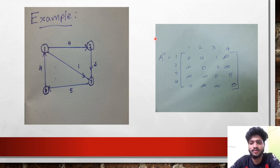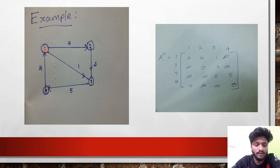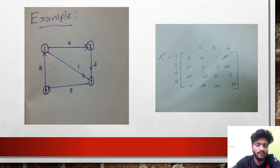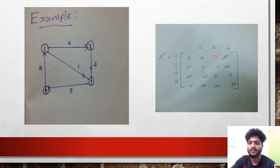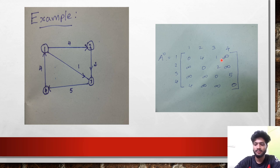We fill the distance matrix such that all diagonal elements are 0. Then we find element A0[1,2] by checking the weight of the edge from vertex 1 to vertex 2, which is 4, so we fill A0[1,2] with 4. The weight of the edge from 1 to 3 is 1, so A0[1,3] = 1. There is no edge from 1 to 4, so A0[1,4] = infinity. This way we fill all vertices to complete the distance matrix.